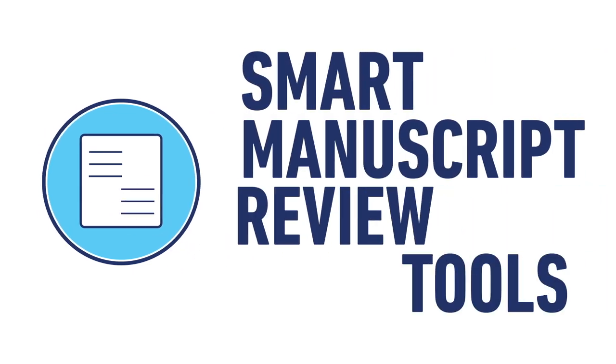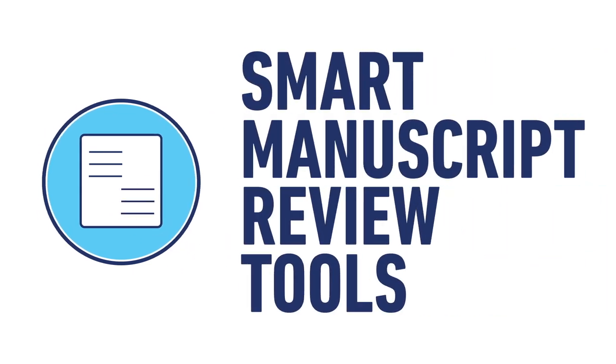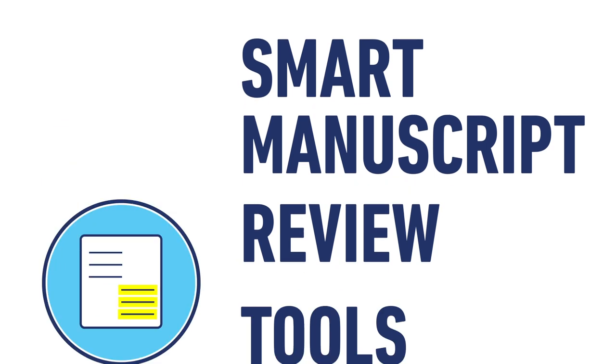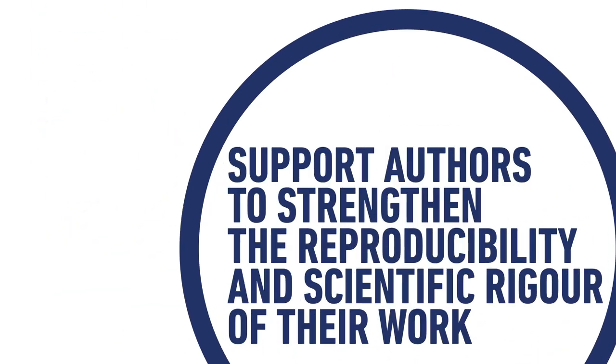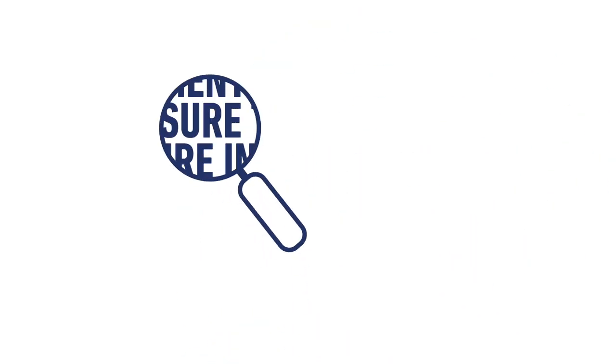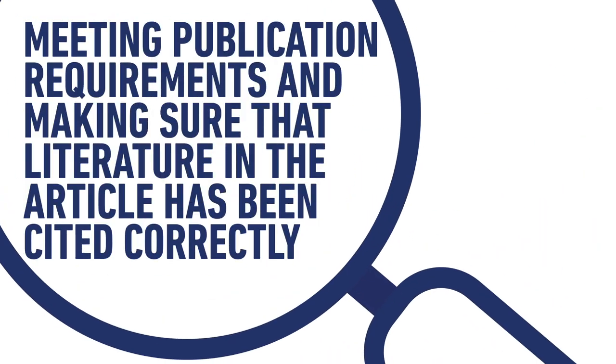To support our authors and give their research the best chance of being published, the Access Microbiology platform will offer feedback from SPAR manuscript review tools. These will give immediate feedback highlighting areas for improvement upon submission and streamlining the publishing process. These tools will support authors to strengthen the reproducibility and scientific rigor of their work, whilst meeting publication requirements and making sure that the literature in the article has been cited correctly.